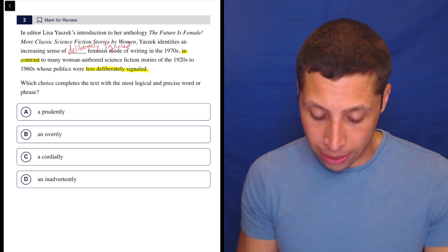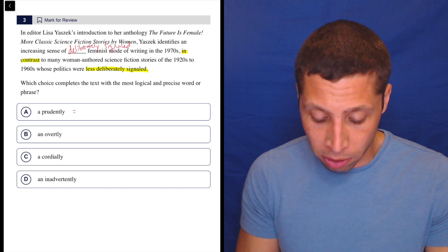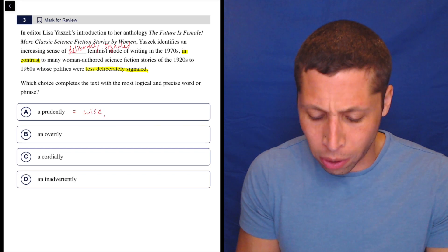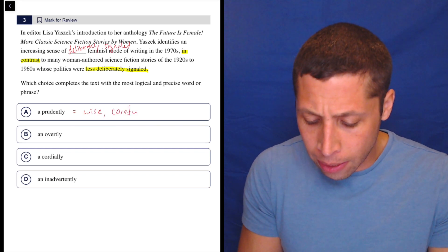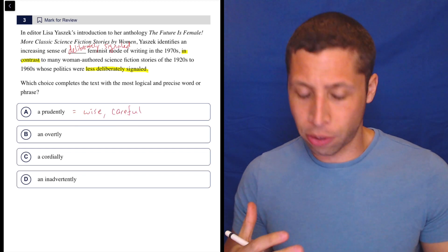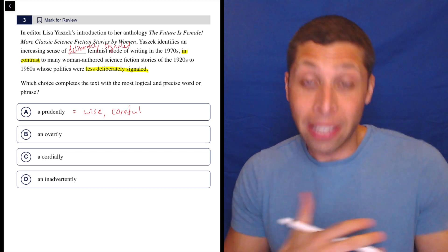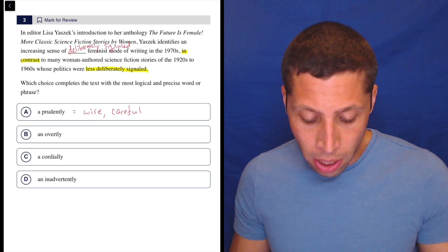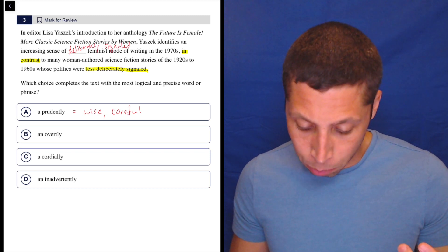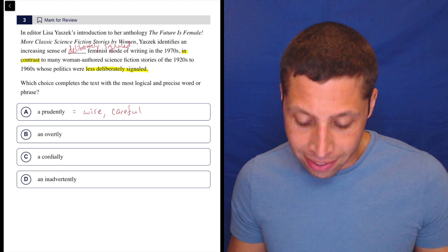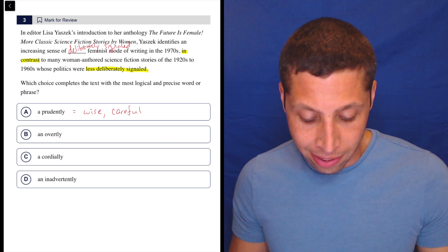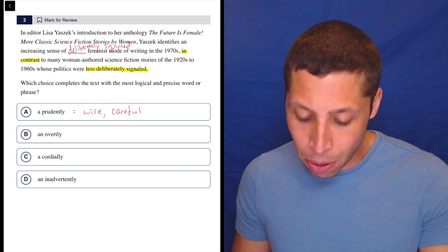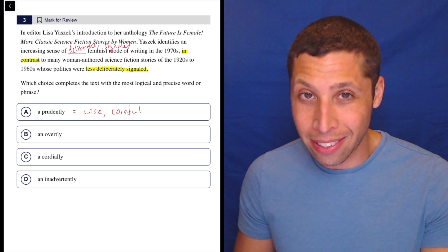So prudently, or prudent, just means something is wise or careful. It means like you're cautious, you think things through. So it just has nothing to do, maybe it does have to do with the sense of deliberate. If something is deliberate, it might be prudent. Let's put that in the blank though. Yassick identifies an increasing sense of a prudently feminist mode of writing in the 1970s.